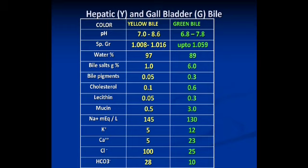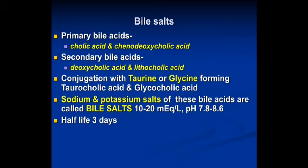Comparing hepatic bile and gallbladder bile: the pH is lower in gallbladder bile, water content is higher in liver bile, and bile salts and bile pigments are more concentrated in gallbladder bile due to concentration. Sodium and potassium are almost similar; bicarbonate is higher in liver bile. The primary bile salts are cholic acid and chenodeoxycholic acid, and the secondary bile acids are deoxycholic and lithocholic acids. They are conjugated with taurine and glycine forming taurocholic and glycocholic acids. The sodium and potassium salts of these are called bile salts, present at around 10–20 mmol/L with a pH of 7.8–8.6, and a half-life of about 3 days.